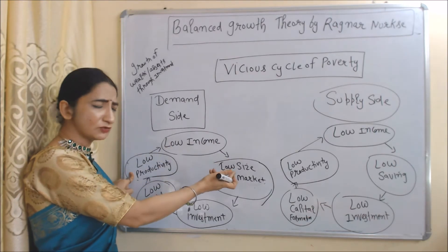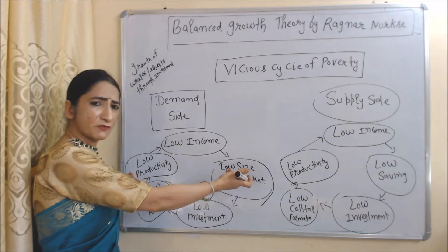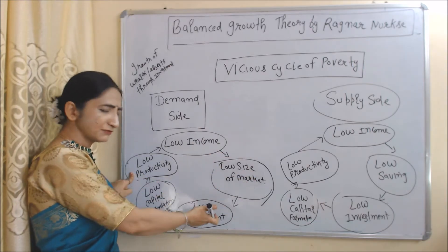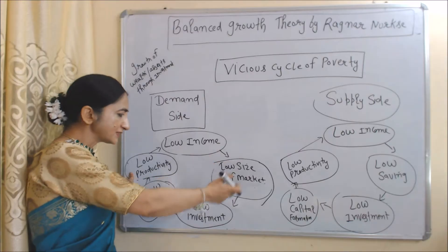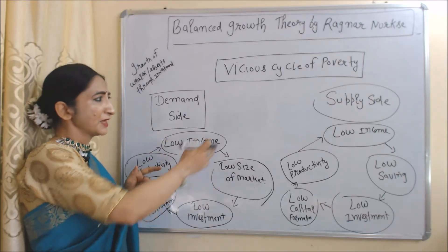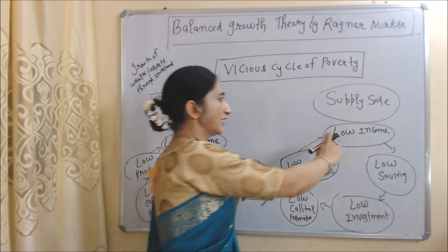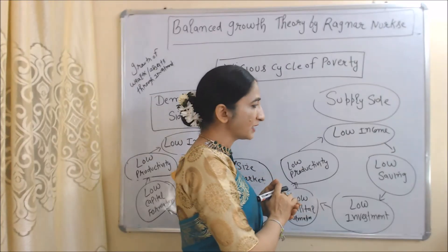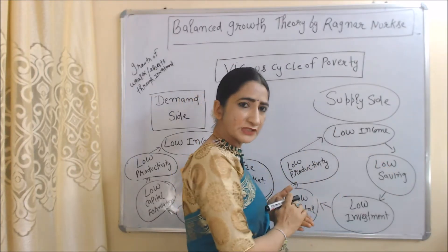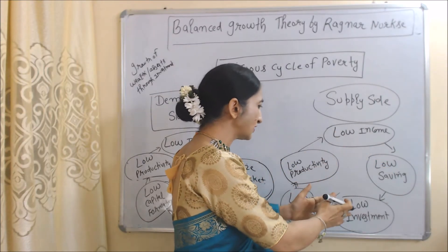Again, low income will lead to low demand, resulting in a low size of market, which leads to low investment. This cycle will continue to run. On the supply side, underdeveloped countries have low income, which leads to low saving, and low saving leads to low investment.